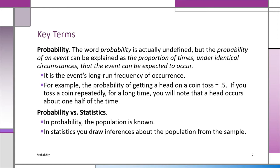If you toss a coin repeatedly under identical conditions — your hand doesn't get tired, there are no wind conditions — then the probability of getting a head on a single coin toss, as we know, is 0.5. Half for head and half for tail. If you do this experiment repeatedly for a very long time, about half of the time you should get a head. This all goes toward defining the word probability, which we can't really do directly.